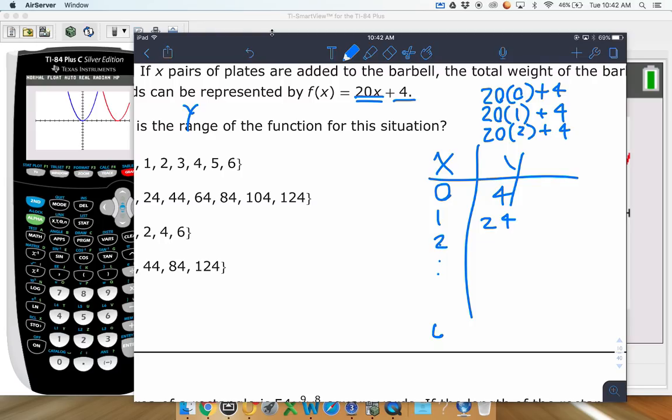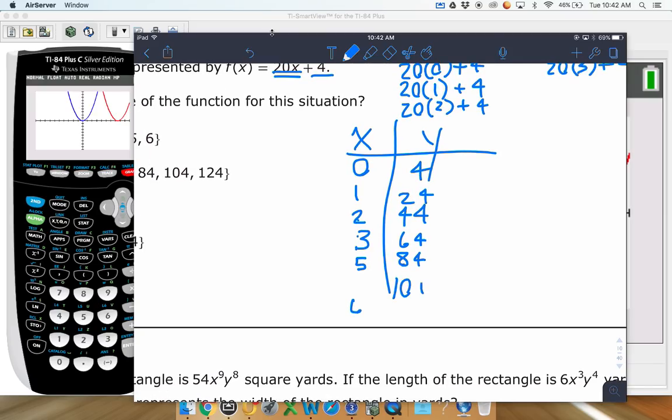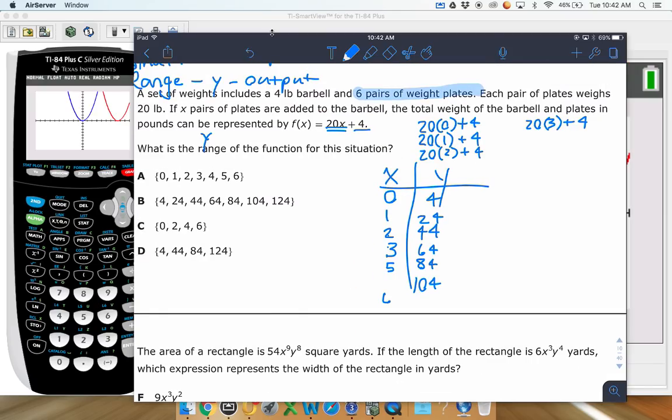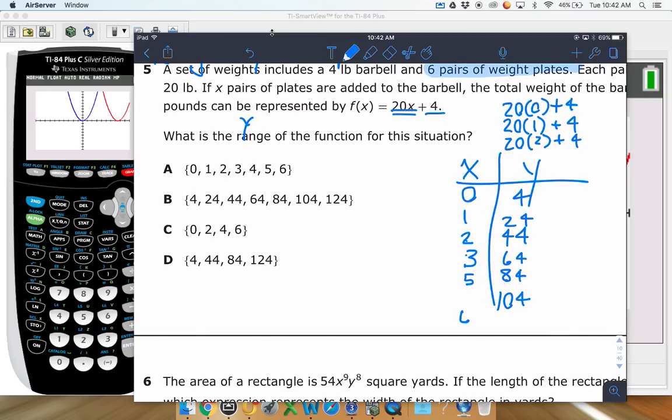You can keep going and doing the same thing for each of these all the way up to 6 eventually. So for 2, we get 40, so that would be 44. For 3, most of you guys are going to start to see the pattern. That would be 60 plus 4, so that would be 64. For 4, that would be 84. 5 would be 104. And then I guess 6 would be 124 at the end.